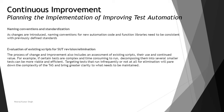The process of change and improvement also includes an assessment of existing scripts — their use and continued value. For example, if certain tests are complex and time-consuming to run, decomposing them into several smaller tests can be more viable and efficient. Targeting tests that run infrequently or not at all for elimination will reduce the complexity of the test suite. As you move those test cases out, your test suite becomes lighter in weight and faster in performance, bringing greater value to test automation improvement.